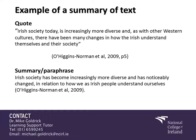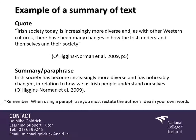That would be an original quote from O'Higgins Norman et al., 2009, page 5. Underneath this, we can see a summary or paraphrasing of it: 'Irish society has become increasingly more diverse and has noticeably changed in relation to how we as Irish people understand ourselves.' What we've done in this case is taken the original material and put it into our own words, which demonstrates to our readers that we've read the material, understood the material, and processed it in language that we understand. This is very relevant for your essays and projects, because it gives more academic weight to your assignments — it demonstrates that you not only understood your coursework and books, but were actually critical and thought about what you were reading. Always remember: when using a paraphrase, you must restate the author's ideas in your own words. It's not enough just to change one or two words — you must transform the original text using your own language.